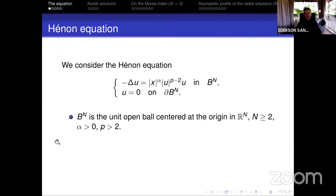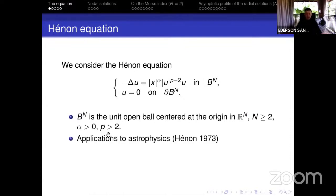This is the Hénon equation. We have minus Laplacian of u equals this term on the right-hand side, in B_n, and u equals 0 on the boundary of B_n, where B_n stands for the unit open ball centered at the origin of R^n, and I consider n greater or equal to 2. Alpha here in the weight is a positive parameter, and p is bigger than 2. This equation appeared for the first time when it was introduced by Hénon — it's named after his paper of 1973.